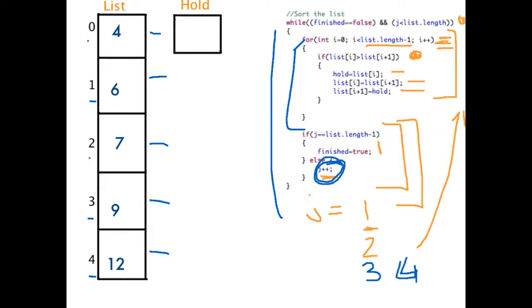So let us continue. Finished is still false, j is less than list dot length. Let's go back into that for loop. Is four greater than six? No. Is six greater than seven? No. Is seven greater than nine? No. Is nine greater than 12? No. So we've finished that internal for loop. If j is equal to list dot length minus one, we are going to set finished to true. So finished is now true. For this while loop to happen, both of these things must be true. Because one of them is no longer true, that means that we finish sorting the array and everything is done and we can continue on with our code.